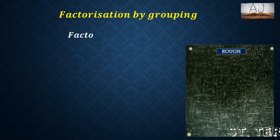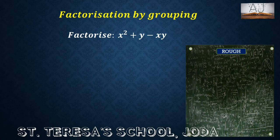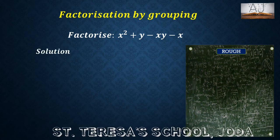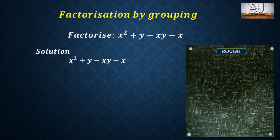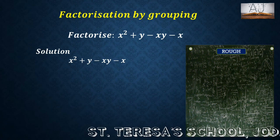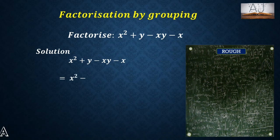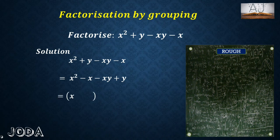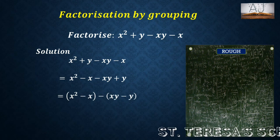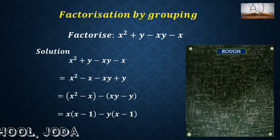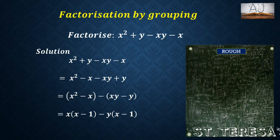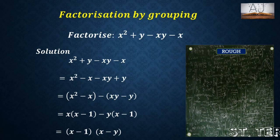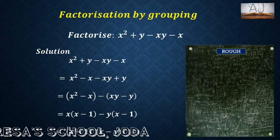Let us now factorize x square plus y minus xy minus x by the method of grouping. We don't have anything common in all the terms, so let us group them. Rearranging: x square minus x minus xy plus y. Taking the first two inside a bracket and the last two inside a bracket. From the first two, x is common, and from the last two, y is common. Now inside both brackets we have x minus 1 common. What is left in the first is x, and in the second is y. So the factors are x minus 1 and x minus y.